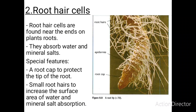Root hair cells are found near the ends of plant roots and their main function is to absorb water and mineral salts. The special features that enable this are possessing a root cap to protect the tip of the root as it grows into the soil, and possessing small root hairs that increase the surface area for water and mineral salt absorption. In this diagram we can see a root hair cell with the root cap and the root hairs which increase the surface area for absorption.